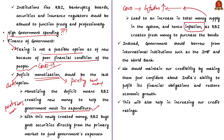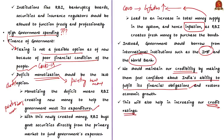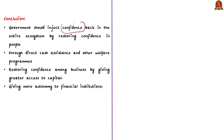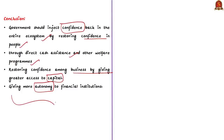The authors suggest the government should resort to borrowing from international bodies like IMF and World Bank. India already has very good credibility with respect to previous loan repayments, and we should maintain this by making them feel confident about India's ability to fulfill its financial obligations. When we repay loans on time, our credit ratings also improve. The authors conclude that the government should inject confidence back into the entire ecosystem through direct cash assistance, welfare programs, greater access to capital for businesses, and more autonomy for financial institutions — thereby restoring economic growth.